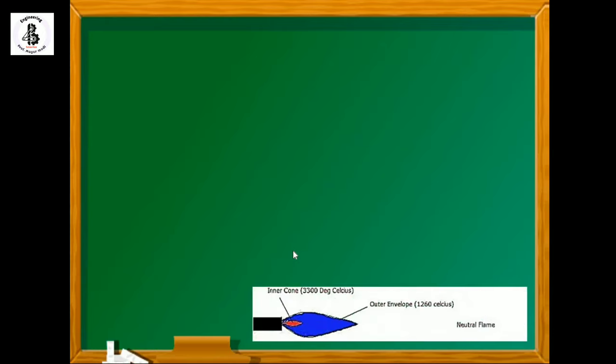Just you can see the neutral flame. In the neutral frame, the oxygen and acetylene will be having the same proportion, or you can say 1 to 1. As the figure shows, it will be having two cones. One will be the inner cone which will be having a red color and that will be around 3300 degree centigrade temperature. And the neutral flame will be having an outer envelope which will be around 1260 Celsius.